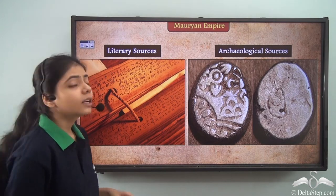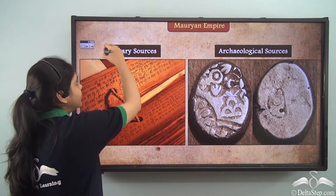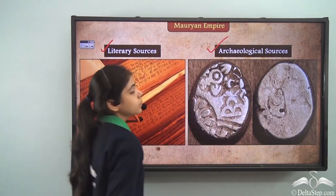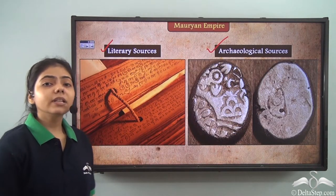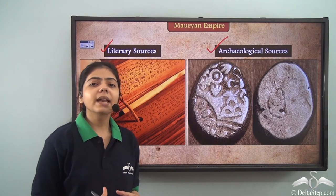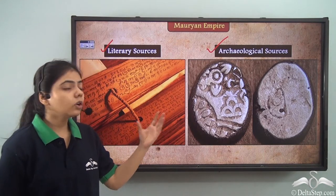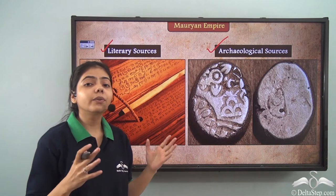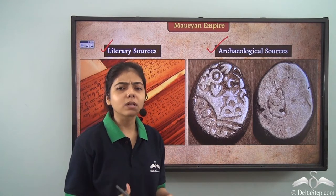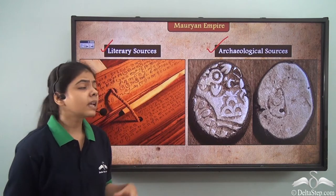There are two sources of history: the literary sources and the archaeological sources. Literary sources are anything that you find in written form, and archaeological sources are anything you find like monuments, buildings, rocks, and pillars.